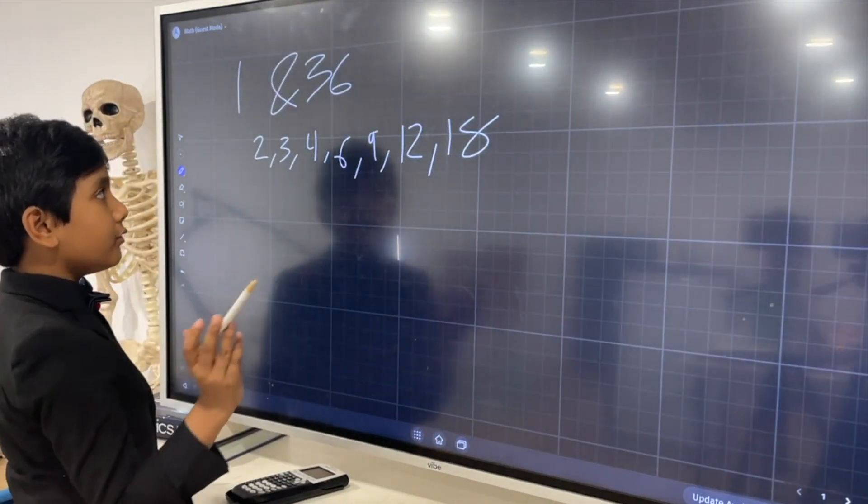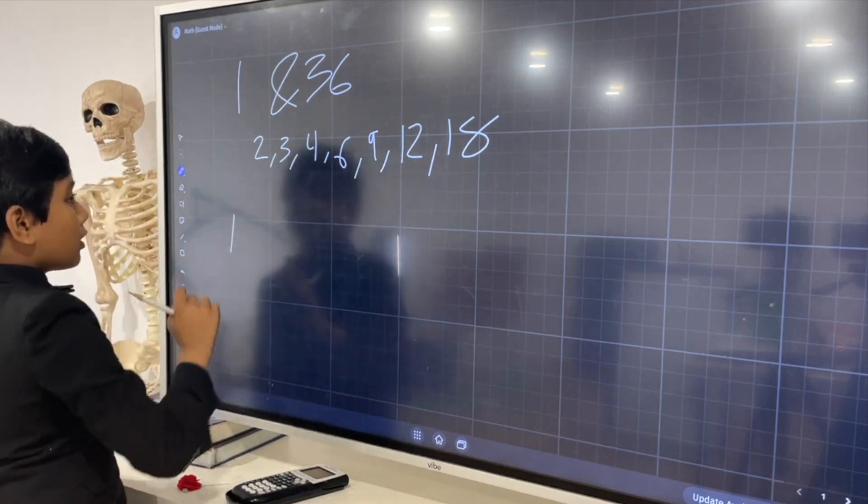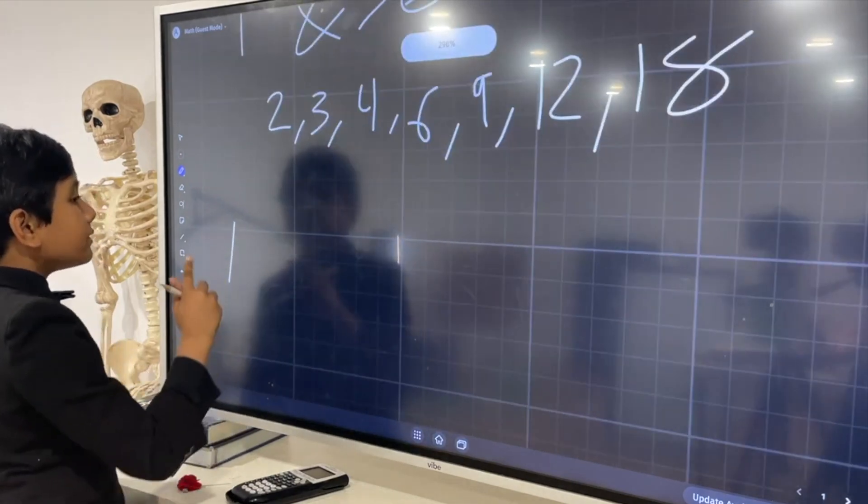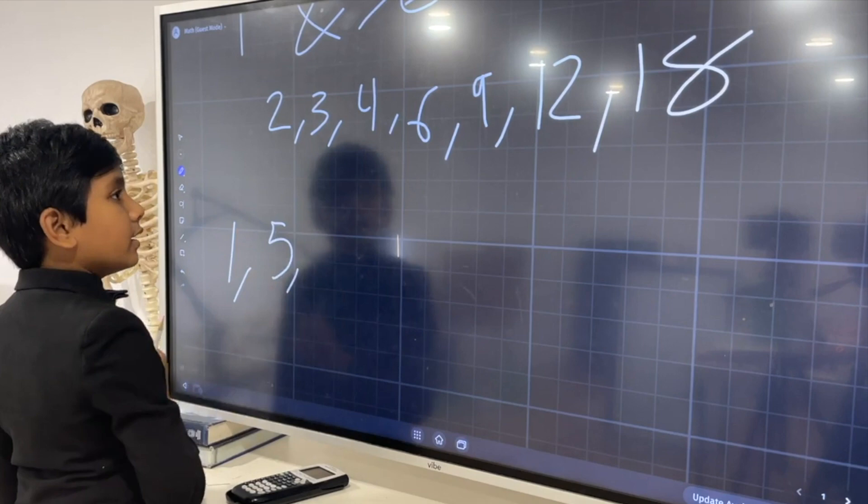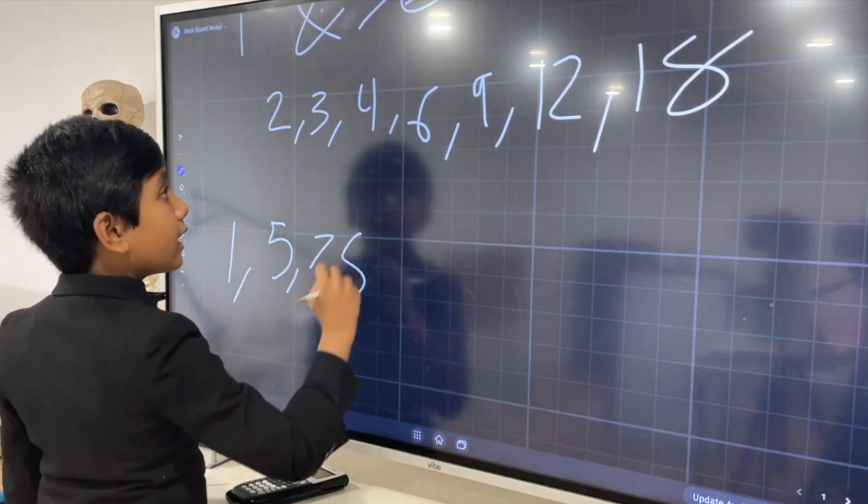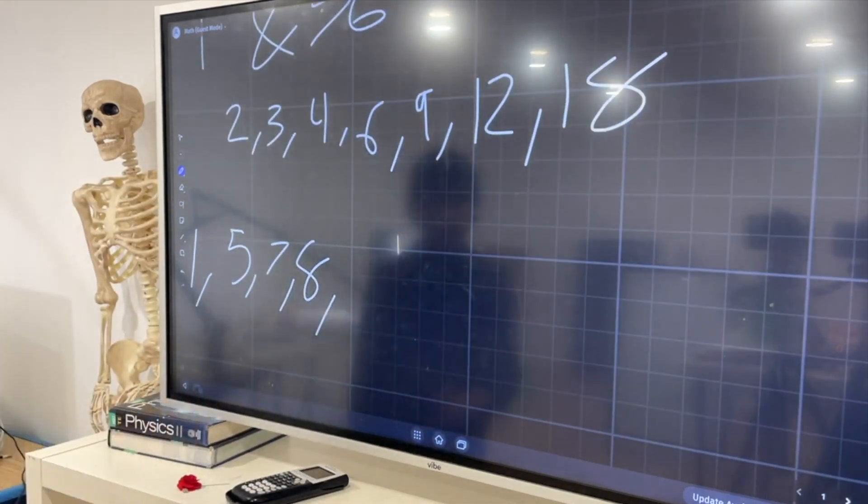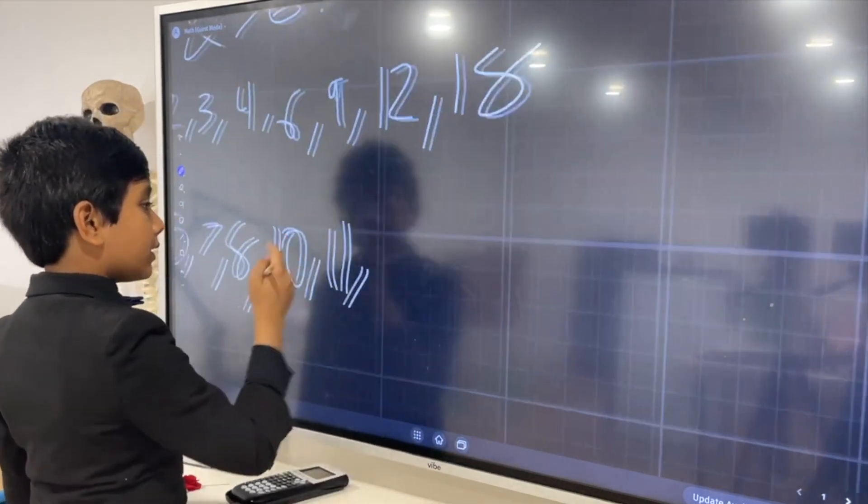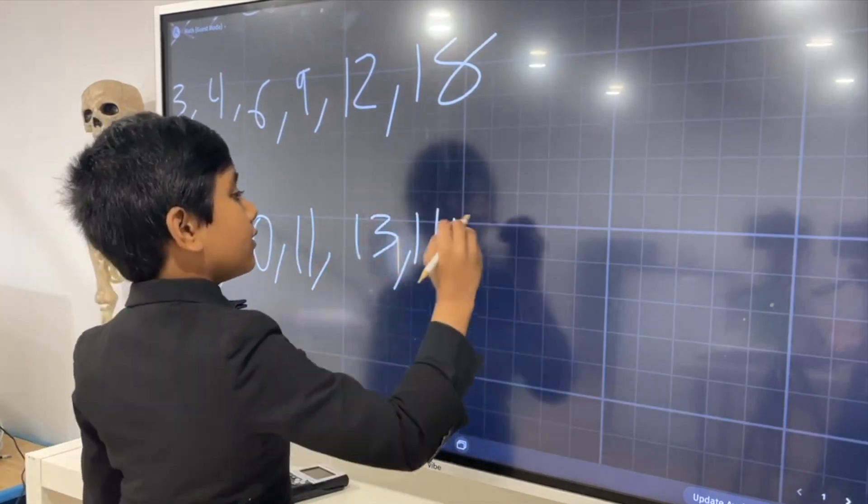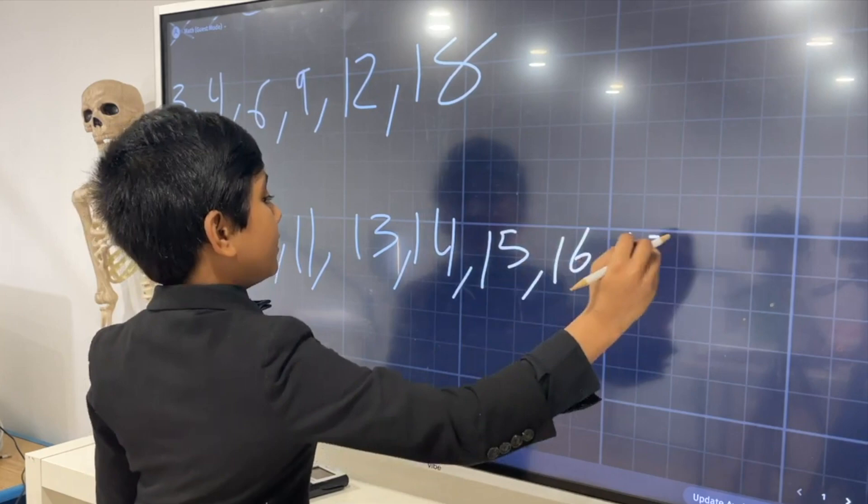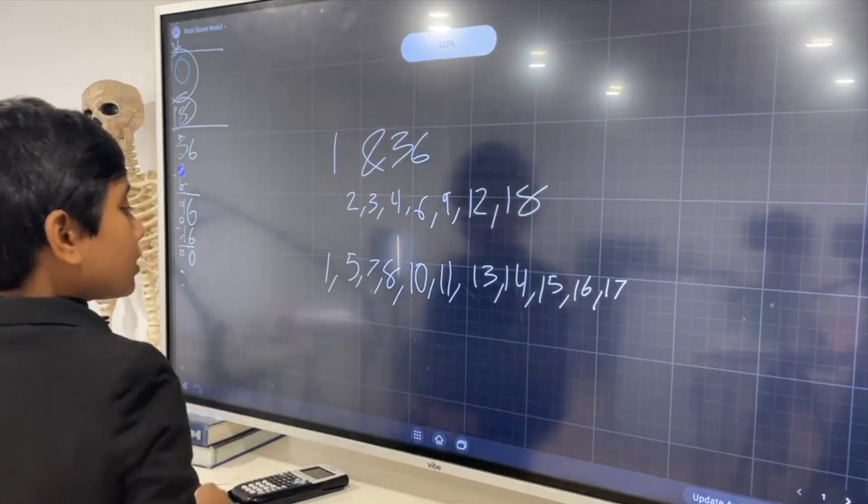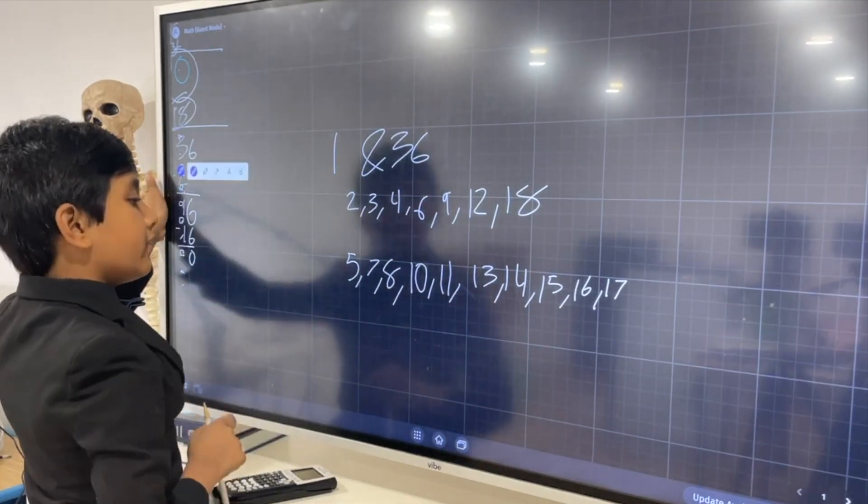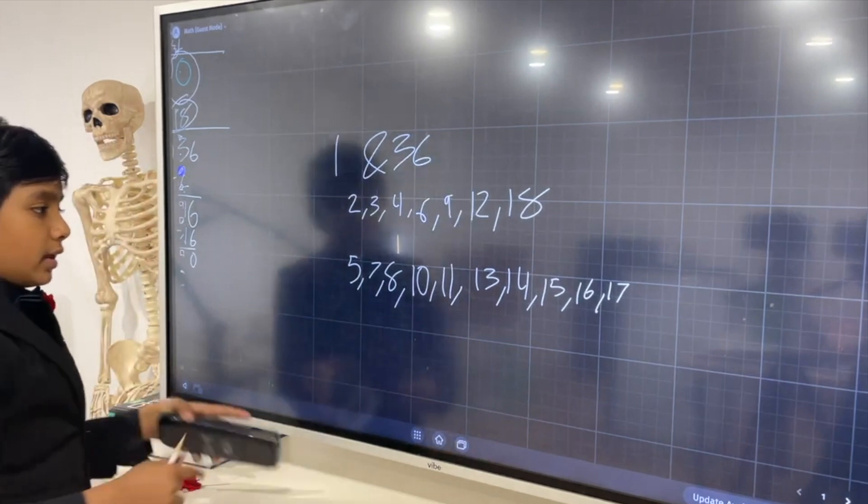So, now, let's see. Let's test all of the numbers that are below 18 that we haven't already. We haven't tested 1, we haven't tested 5, 7, 8, we haven't tested 9, we haven't tested 10, or 11, we haven't tested 13, 14, 15, 16, or 17. So, these are all the numbers we need to test. Well, first of all, we already know that 1 will always be a factor, so we can eliminate that.